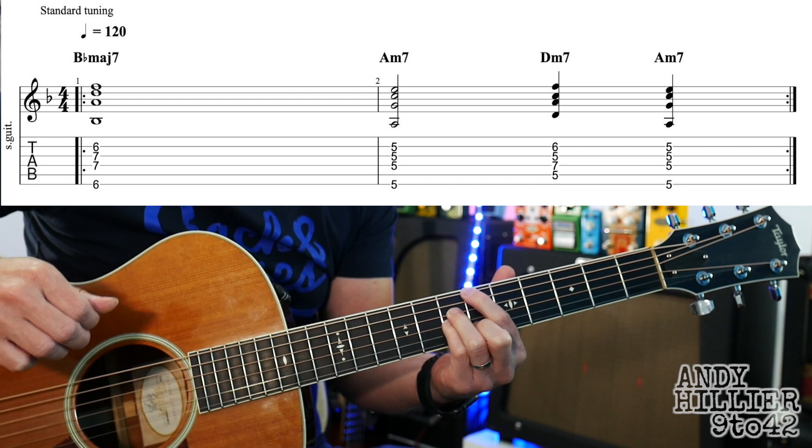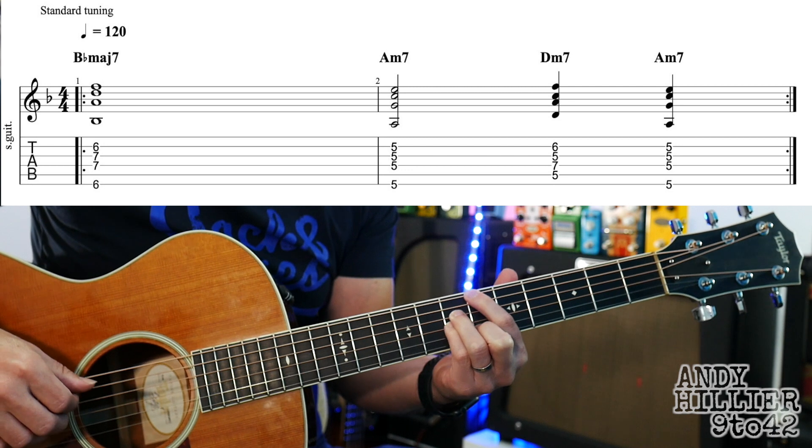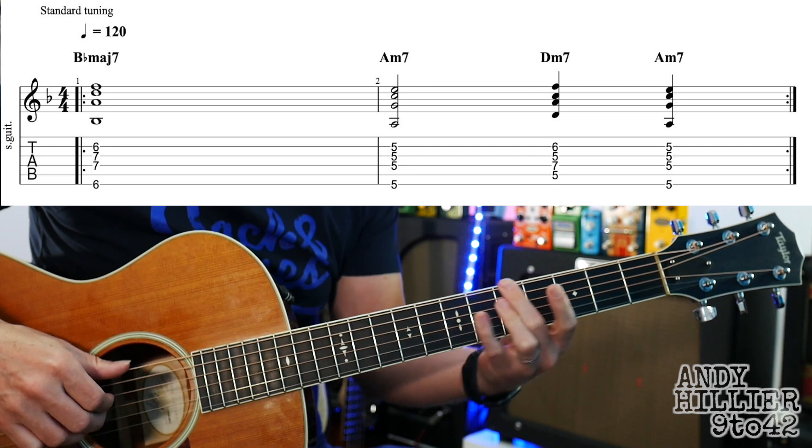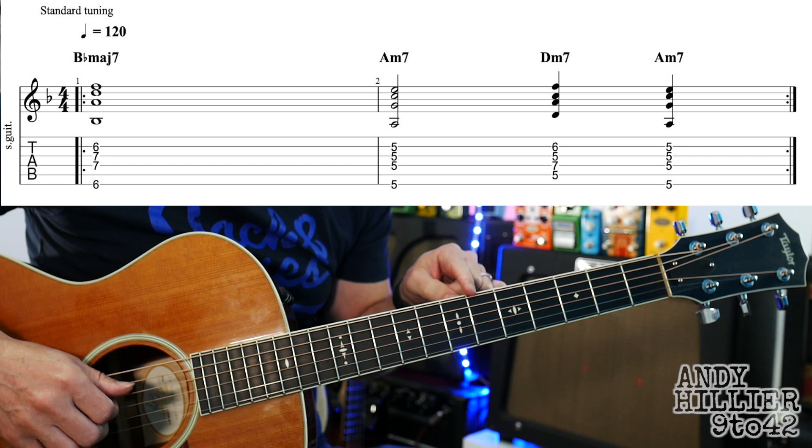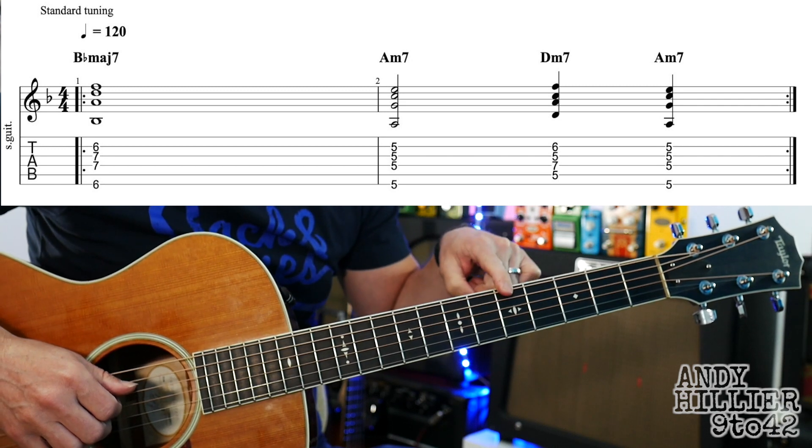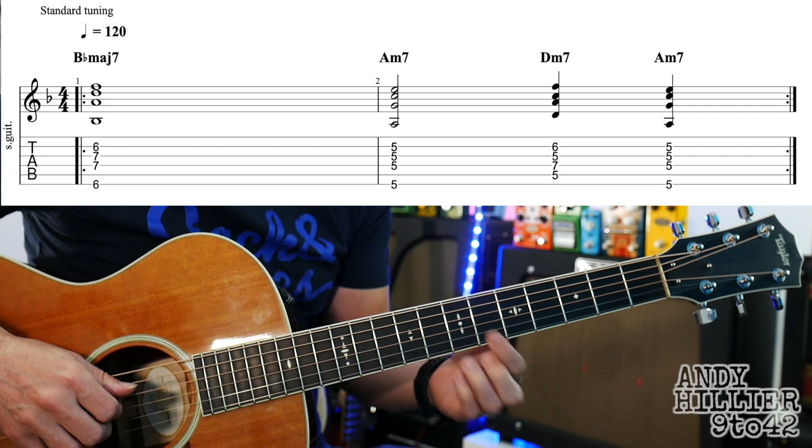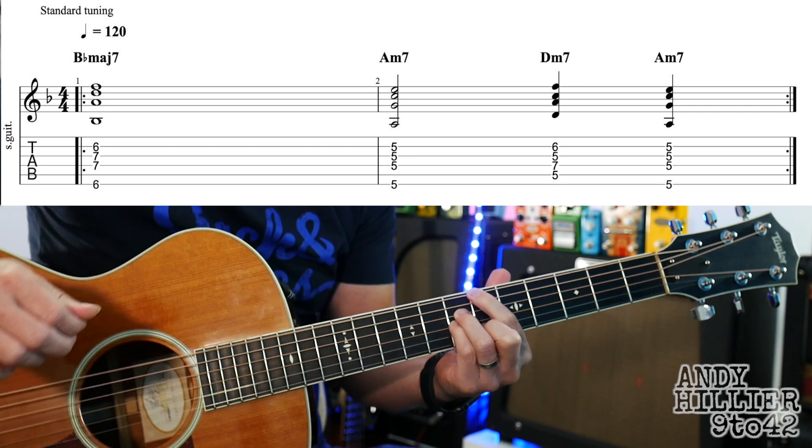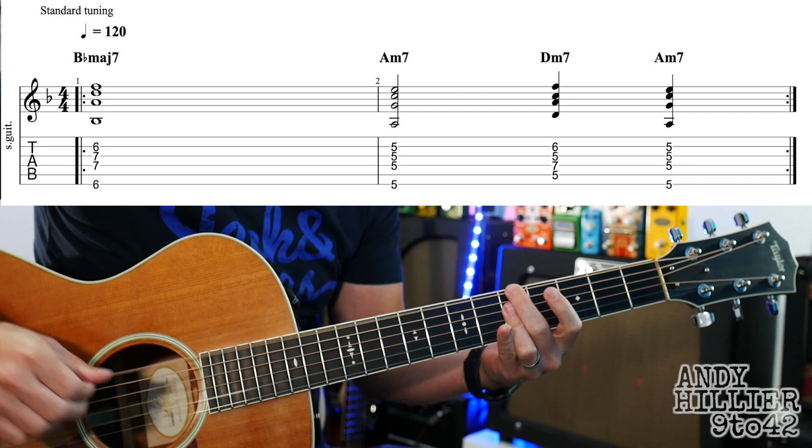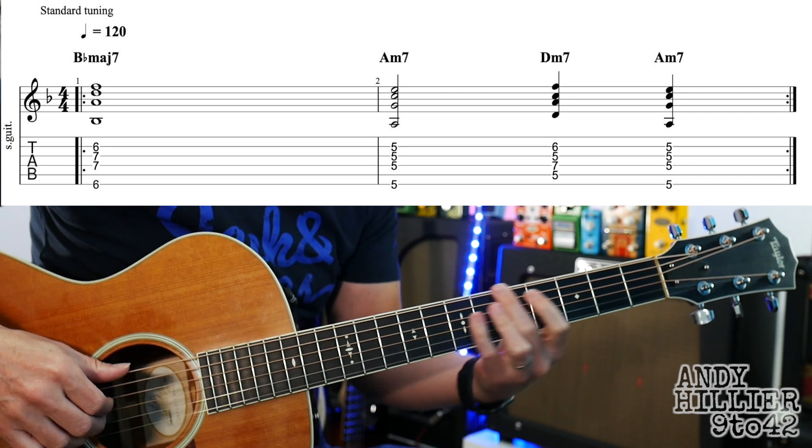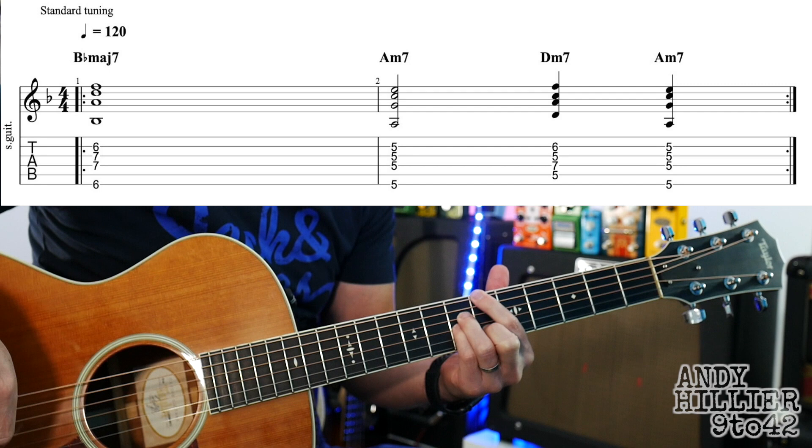So it goes 1, 2, 3, 4, 1, 2, 3, 4. So four beats on the Bbmaj7, two beats on Am7, one beat on Dm7, one beat on Am7. Ready, and 1, 2, 3, 4, 1, 2, 3, 4, and it repeats all the way through the whole song.